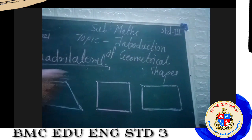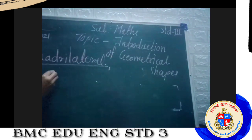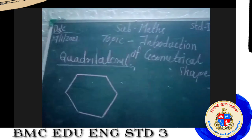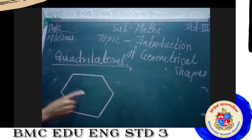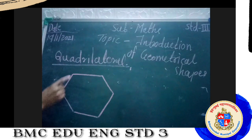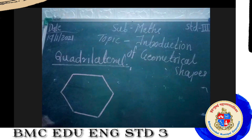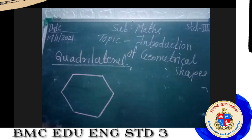Now I am going to draw one more figure. Is this a quadrilateral? It is a hexagon! In a hexagon there are six sides: one, two, three, four, five, and six. So is this a quadrilateral? No! Very good. It is not a quadrilateral — in a quadrilateral there are four sides and four corners. So this hexagon is not a quadrilateral.